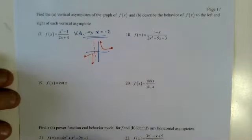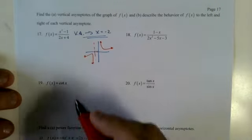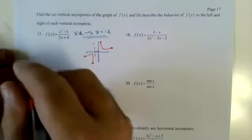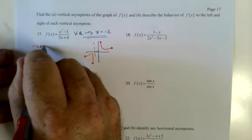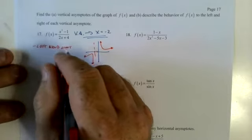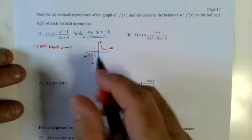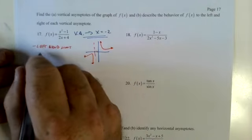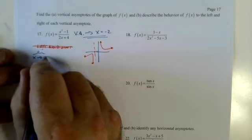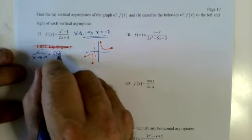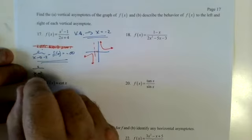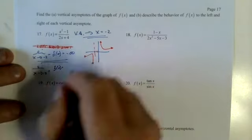Describe behavior left and right of each vertical asymptote. This one's going down to negative infinity — left-hand limit as x approaches negative 2 from the negative side of f(x) is negative infinity. And the limit as x approaches negative 2 from the positive side is positive infinity.